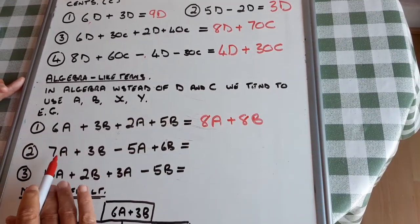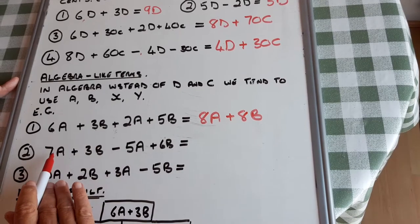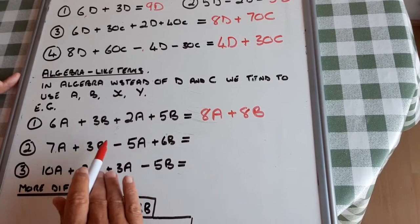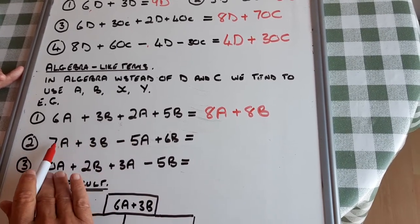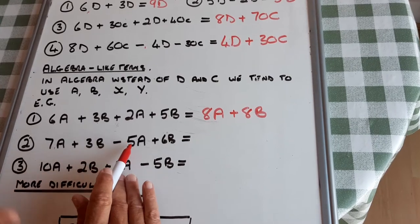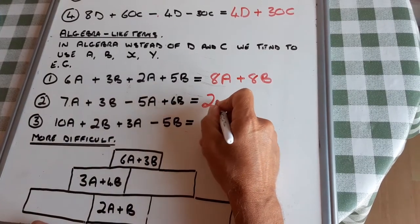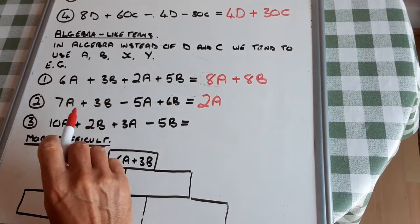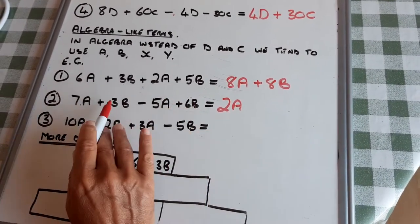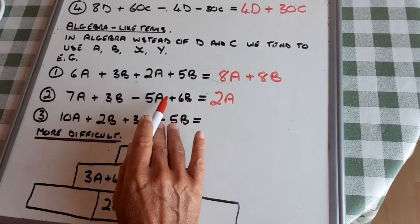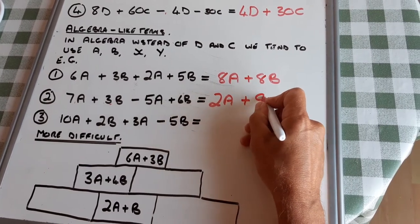This one's slightly harder, because I have a minus sign. So I have 7A, but the minus there is in front of the 5A. So it's 7A minus 5A, which is 2A. I've got 3B. That's a plus in front of that B. So I have 3B plus 6B, which is 9B.